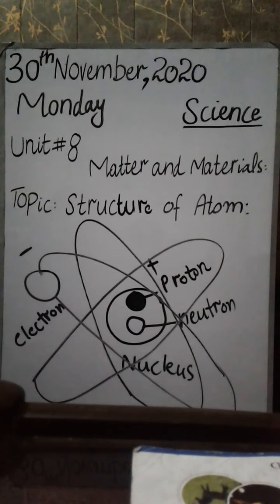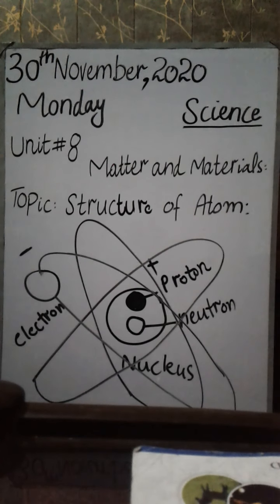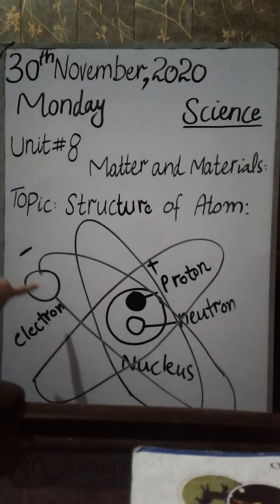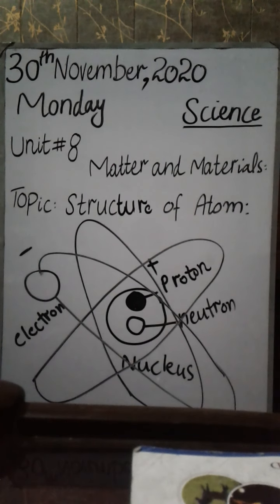To summarize: the central part is the nucleus, which controls all the activities of the cell. Within the nucleus there are two small particles — proton, which has a positive charge, and neutron, which has no charge. Electron is another particle which revolves around the nucleus on the outer side in orbits, which I have drawn as lines on the board, and it carries a negative charge.